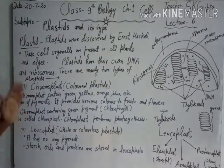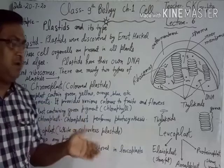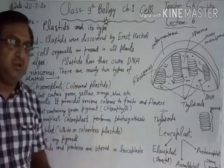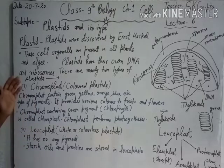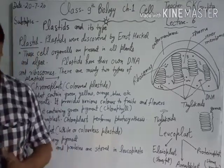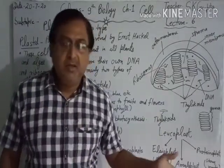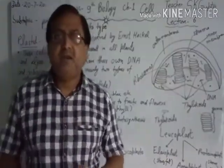Chromoplasts contain green, yellow, orange, blue, and many other colorful pigments, which are responsible for the color of fruits, flowers, and many other plant parts.